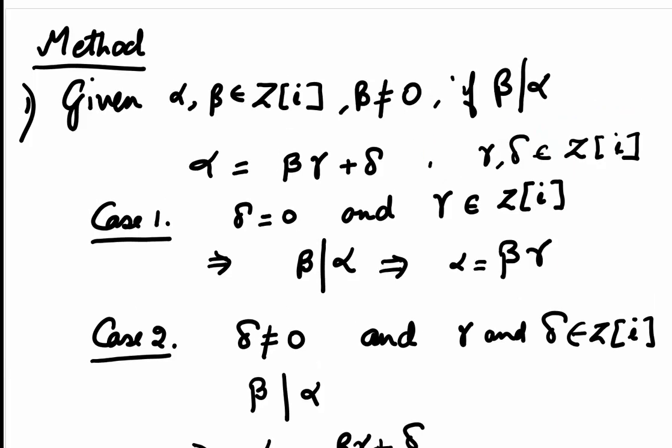Let us say we are given Gaussian integers alpha and beta such that beta is not equal to 0 and beta divides alpha. Then there exist Gaussian integers gamma and delta such that alpha is equal to beta gamma plus delta. There will be three cases. First, that our delta is 0 and gamma is a Gaussian integer. In that case, beta will divide alpha and we will be able to write alpha as beta gamma.